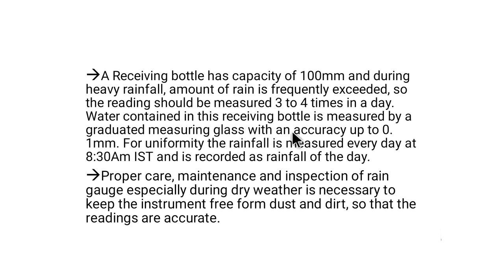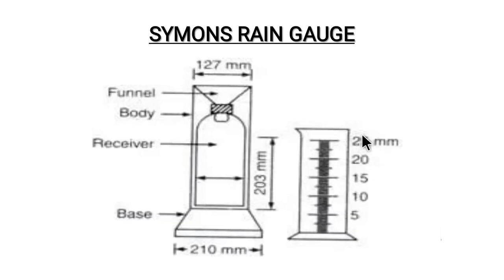The water content in the receiving bottle is measured by a graduated measuring glass with accuracy up to 0.1 mm. For uniformity, rainfall is measured every day at 8:30 a.m. and recorded as the rainfall of the day. You can see the measuring jar from which we measure how much rainfall has collected in the bottle.